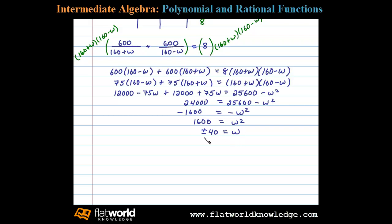Since W represented the speed of the wind, we'll disregard the negative answer, and so the speed of the wind was 40 miles per hour.